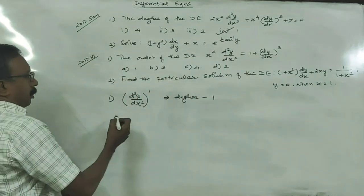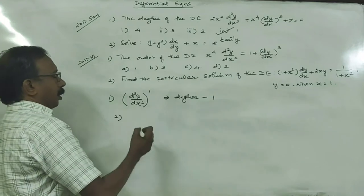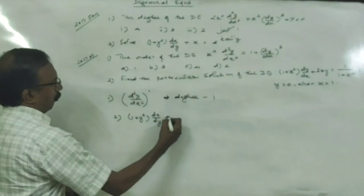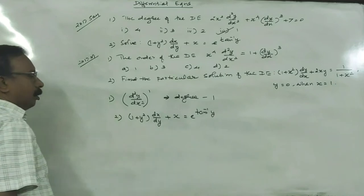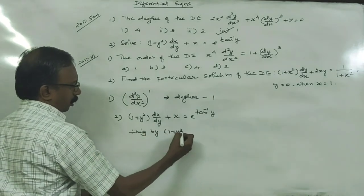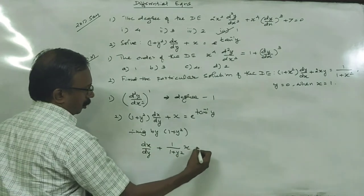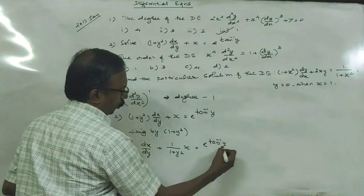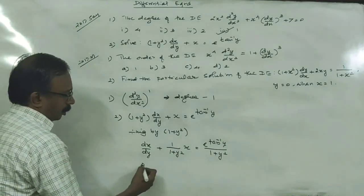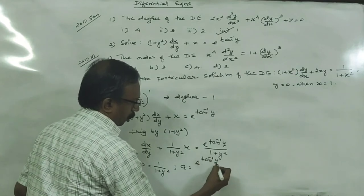In the second question, we have a linear differential equation. We can recognize it: (1 + y²) dx/dy + x = y. Now dividing by (1 + y²), we get dx/dy + (1/(1 + y²))x = e^(tan⁻¹y) / (1 + y²). This is a linear differential equation where P = 1/(1 + y²) and Q = tan⁻¹y / (1 + y²).